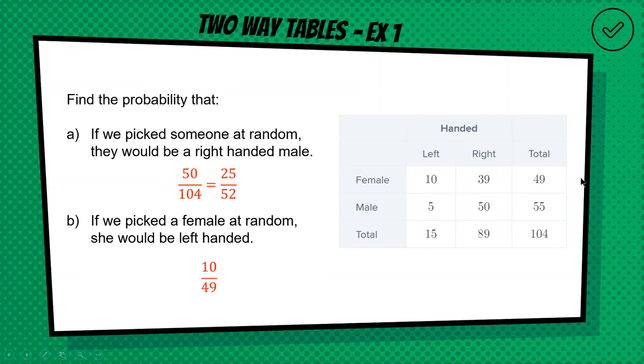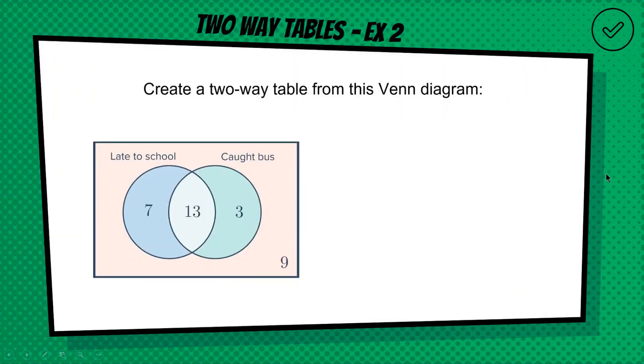All right, so 10 out of 49 is our answer for B, and I'm pretty sure that can't be simplified, so we're going to move on to the last one. For the last example, like I showed you guys before, I want you to construct a two-way table that represents the information in this Venn diagram. So we have one category is late to school, one category is caught the bus, and then we've got the overlap and the outside. Pause the video, see if you can make a two-way table that represents this Venn diagram.